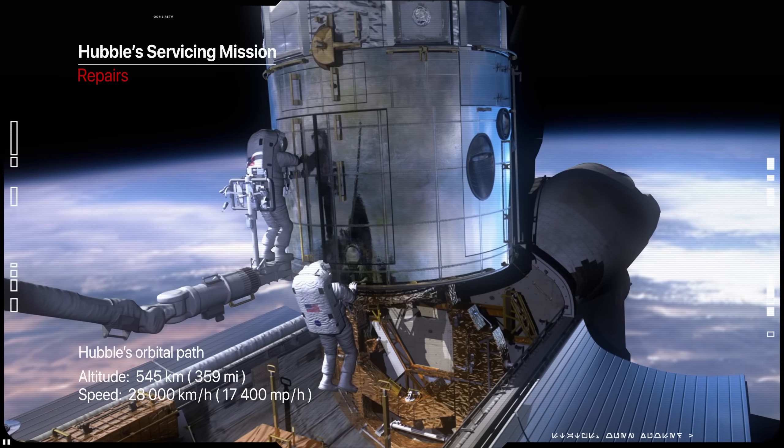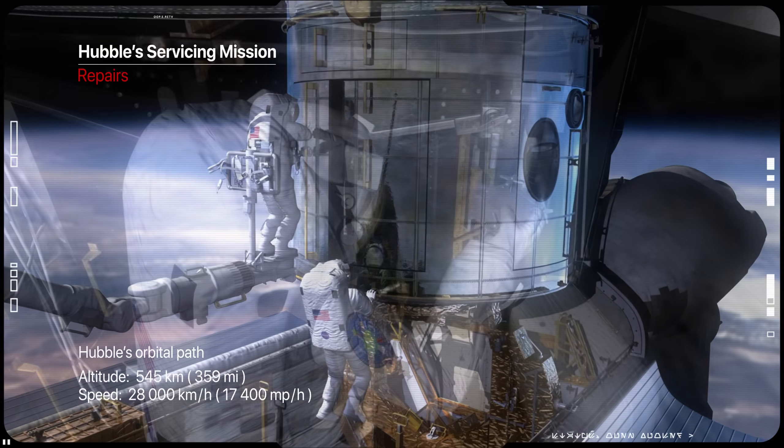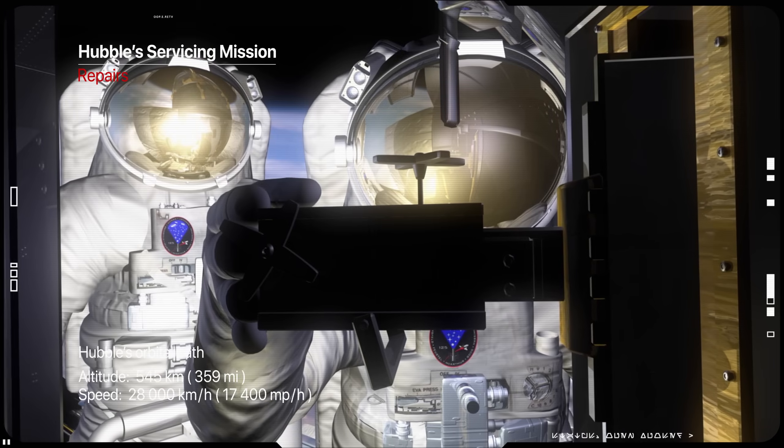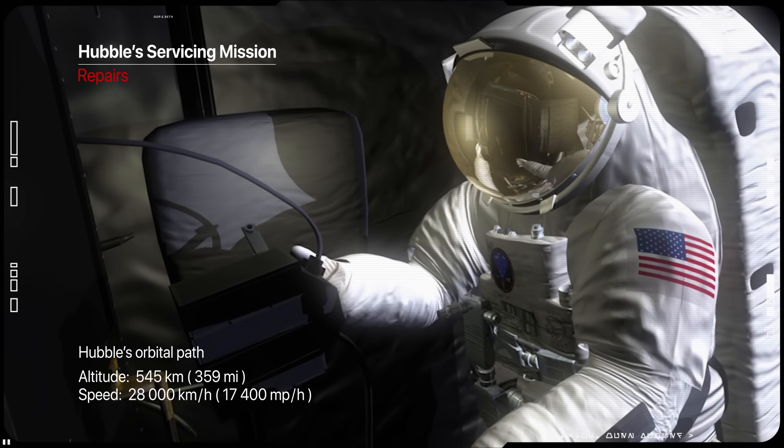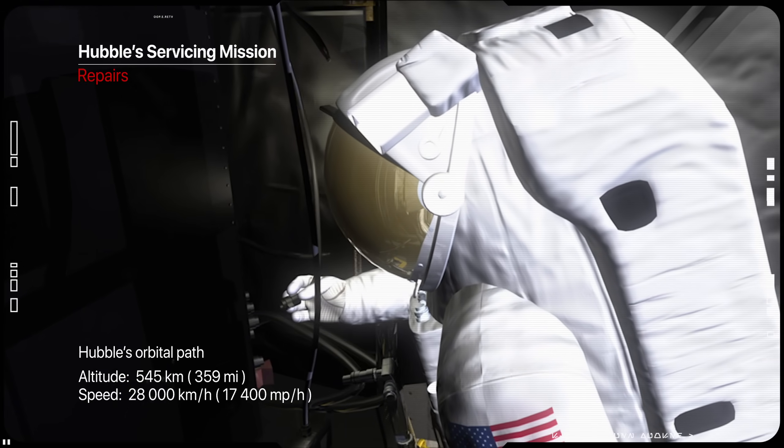Also, the James Webb is not designed to be serviced or repaired because it will be out of reach. Hubble is in low Earth orbit. The L2 is well beyond the reach of human astronauts.